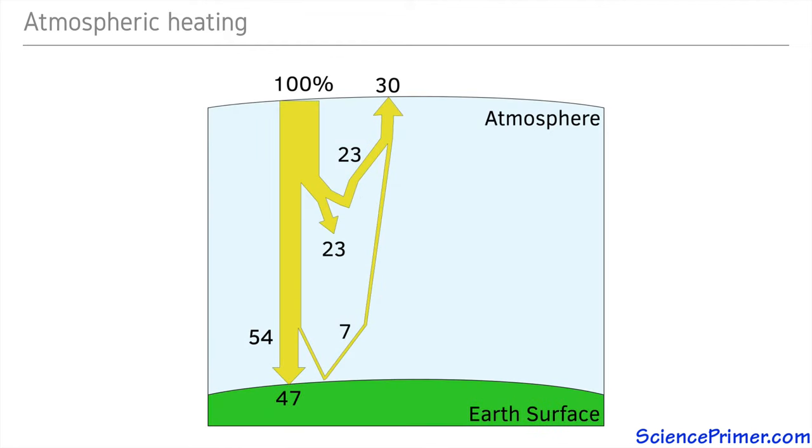Of the solar energy that reaches the Earth, the most important fraction is the 47%, or roughly 160 watts per meter, that reaches the surface and is absorbed.